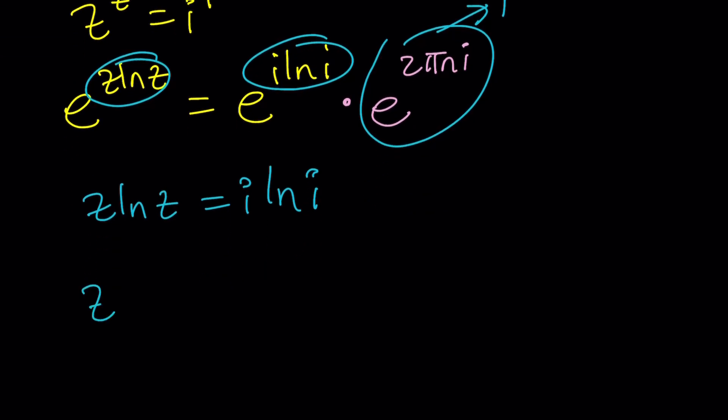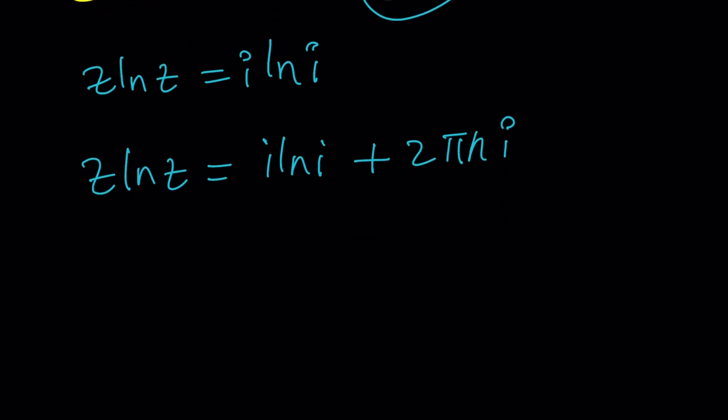That's why complex numbers or solutions are going to be multi-valued. Now, that gives us a different equation. z ln z equals i ln i plus 2 pi n i. And of course, this is going to give you a multiple of i, but don't be fooled by that because ln i is a complex number.